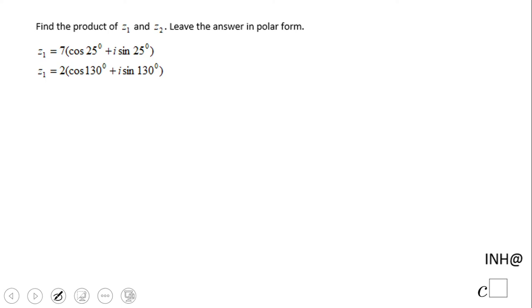Welcome or welcome back to C squared. In this example we need to find the product of two complex numbers and leave the answer in polar form. We have these two complex numbers Z1 and Z2 and we need to multiply.